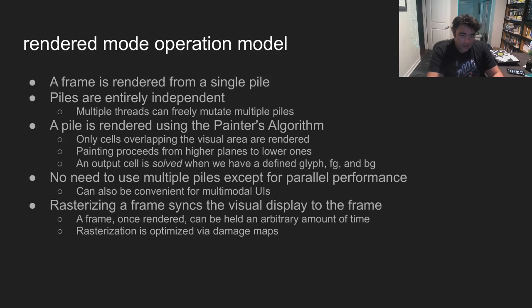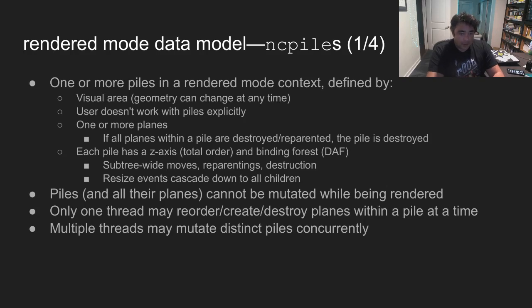The pile is rendered using the painter's algorithm. Initially all cells in the visual area are considered unsolved. Starting from the top plane, any intersecting unsolved cell is analyzed. The glyph channel is solved upon the first encounter with a glyph. The foreground and background colors are solved upon hitting an opaque color. Translucent colors are blended. A cell is solved when all three of these channels are solved. There's no need to use multiple piles except to expose parallelism, though they can be convenient for multimodal UIs. Each rendered mode context contains one or more piles, defined by their visual area and by their component planes. The pile provides a total ordering in the form of a Z-axis and the directed acyclic binding forest. The binding forest represents grouping or ownership. It is possible to move, reparent, or destroy an entire subtree, and resize callbacks propagate down through binding trees.